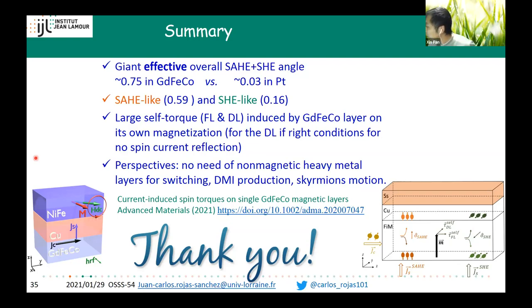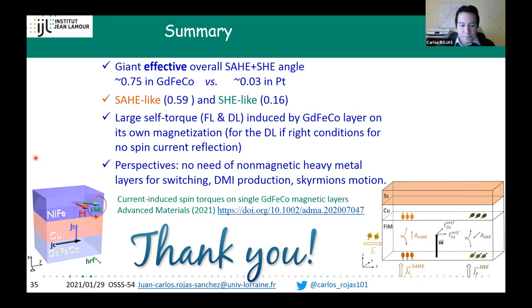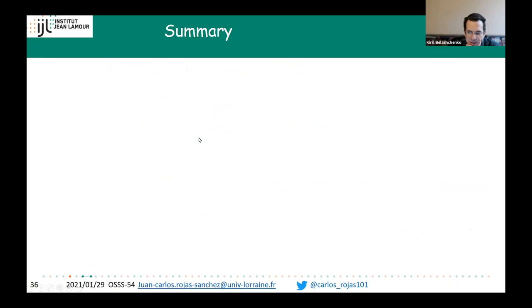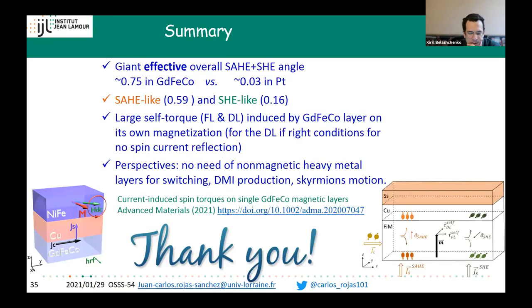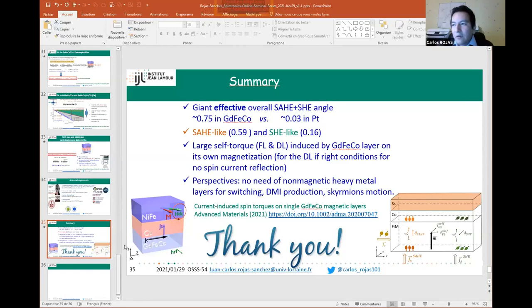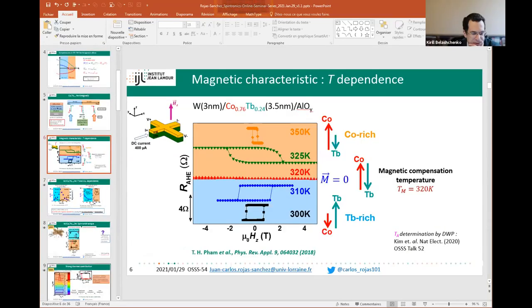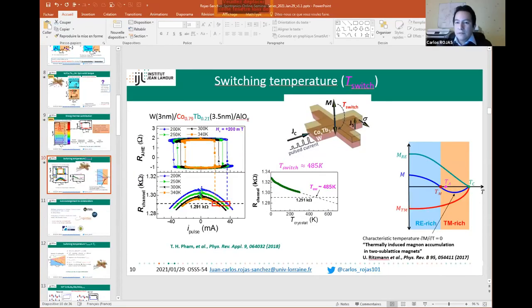I have a question about the first part, specifically the switching temperature. Suppose you were sitting isothermally at that temperature—you would still have a switching current. I'm trying to understand why different initial temperatures and different switching currents all lead to the same device temperature at switching.